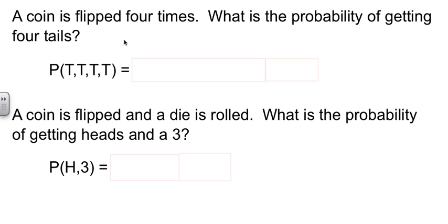So let's consider this situation. We're going to flip a coin four times. I want to know the probability of getting four tails. So I'm looking at the probability of going tails, then tails, then tails, then tails.